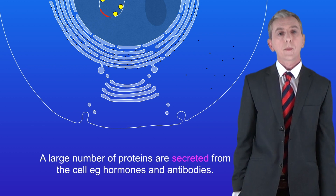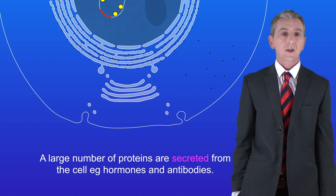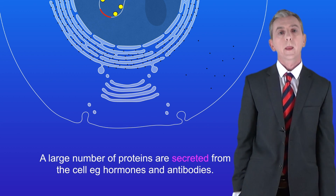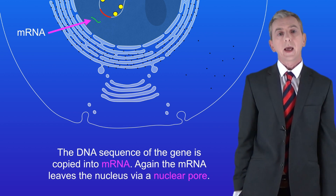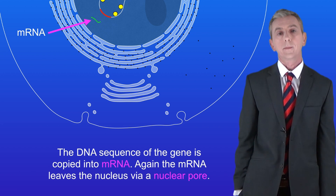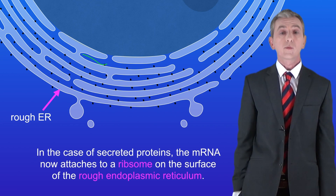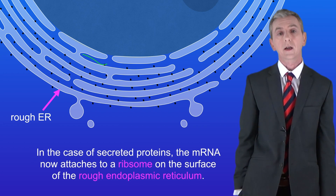However, a large number of proteins are secreted from the cell — good examples are hormones and antibodies. These proteins are synthesized in a different way. Just as before, the DNA sequence of the gene is copied into mRNA, and again the mRNA leaves the nucleus via a nuclear pore. In the case of secreted proteins, the mRNA now attaches to a ribosome on the surface of the rough endoplasmic reticulum.